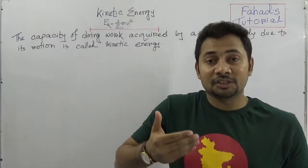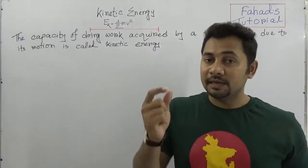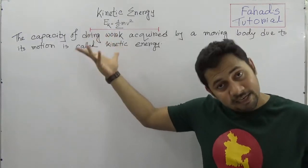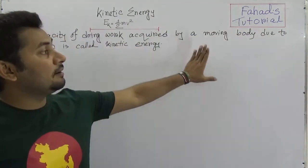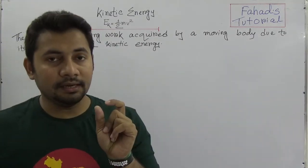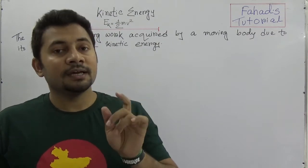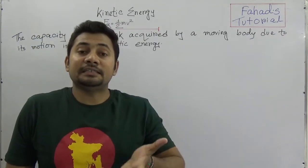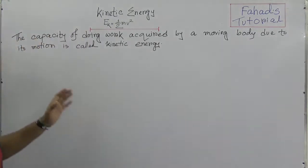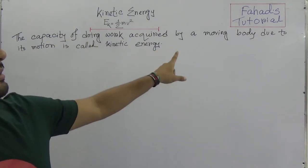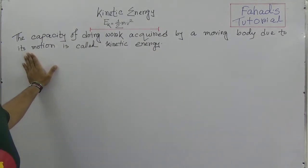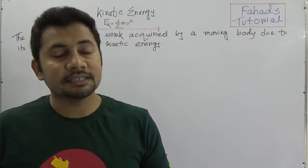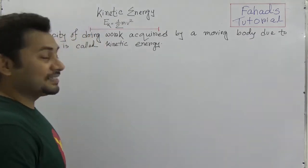As we know, energy is defined as the capacity of doing work. So as we are defining kinetic energy, we first say it is the capacity of doing work that is actually acquired by a moving body. To understand kinetic energy, there should be motion, there should be a velocity, and due to this velocity the kinetic energy of a body is acquired. Simply put, kinetic energy is the capacity of doing work acquired by a moving body due to its motion.